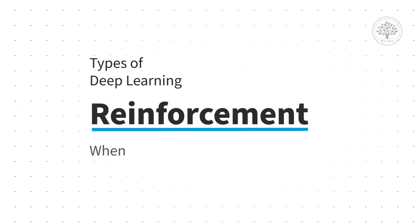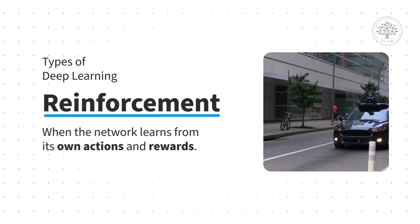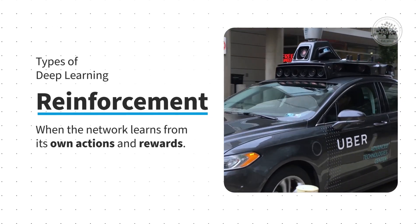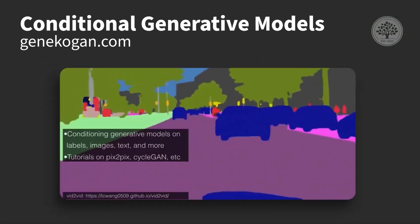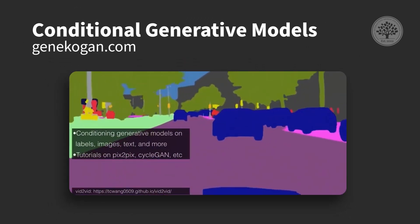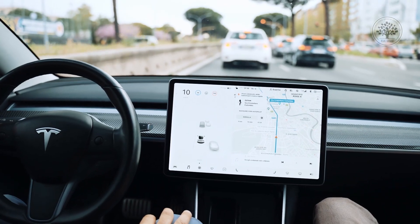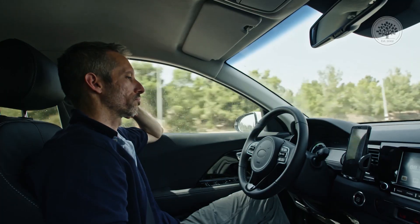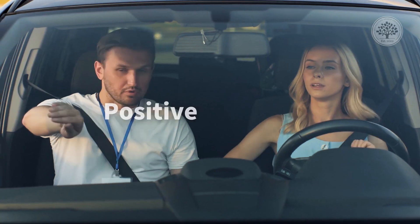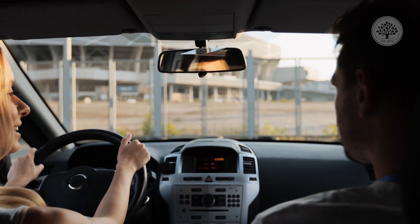Reinforcement learning is when the network learns from its own actions and rewards, such as a self-driving car that learns how to navigate traffic. The deep learning algorithms score how well the system has performed tasks such as steering and braking. Higher scores reinforce successful strategies, much like positive feedback from a driving instructor with human students.